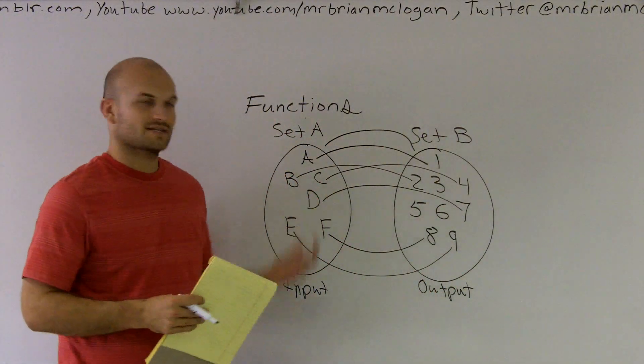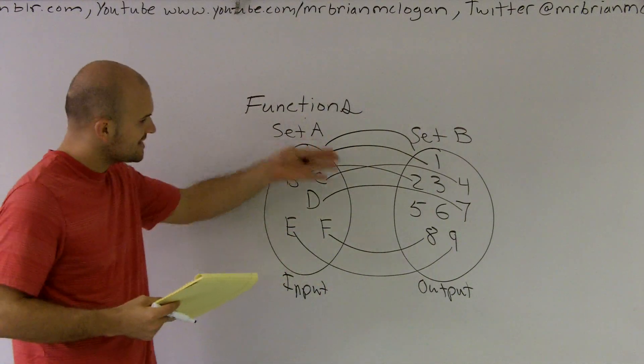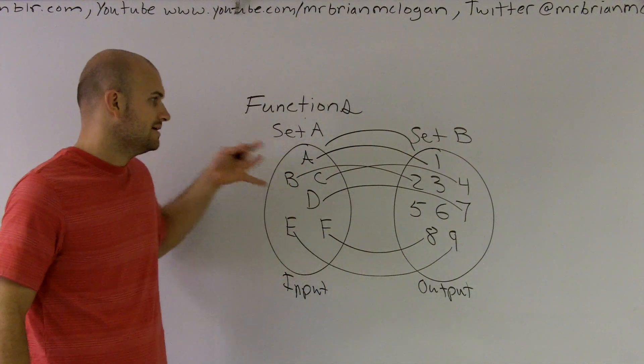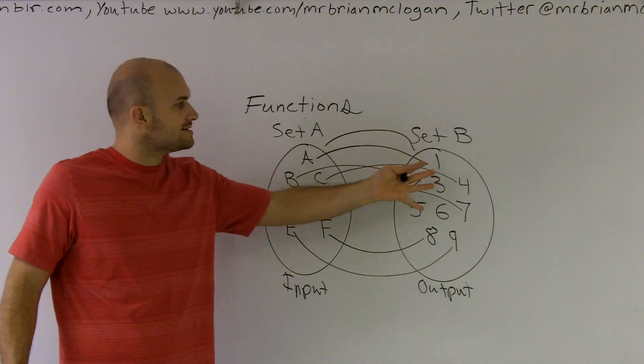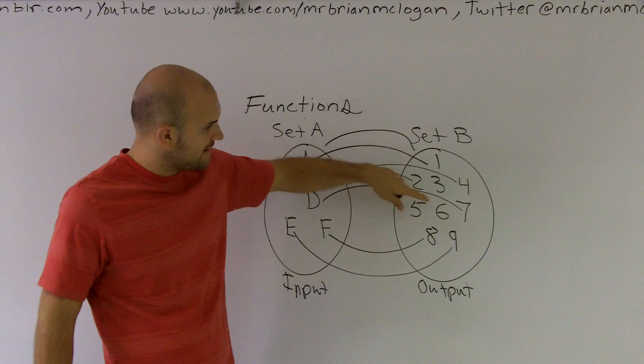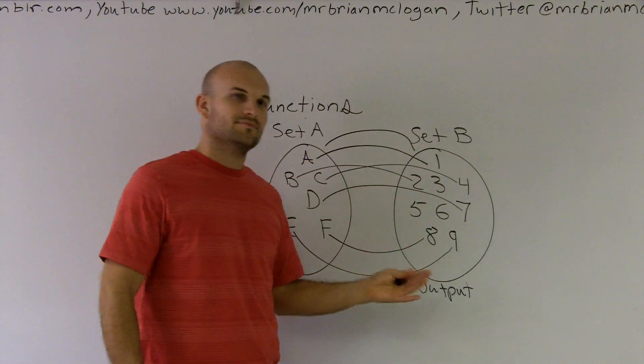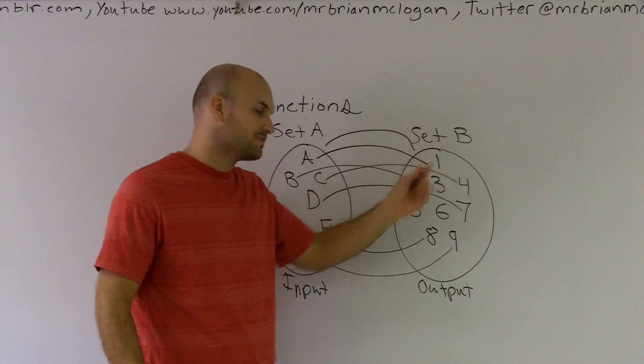This is essentially what we call a function. The reason we call it a function relationship is because every element in Set A has been mapped to an element in Set B. We do have some lonely elements in Set B - 3, 5, and 6 don't have anything mapped to them, but that's okay. It still creates a function relationship.